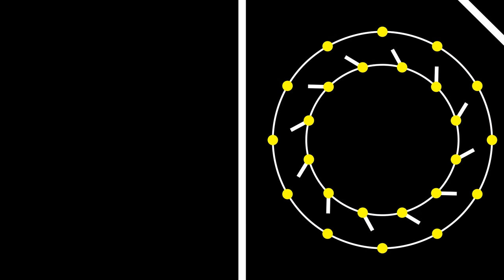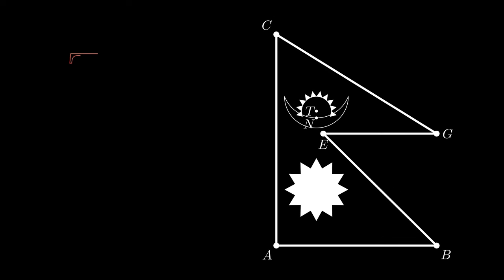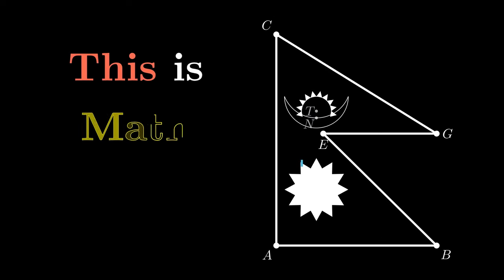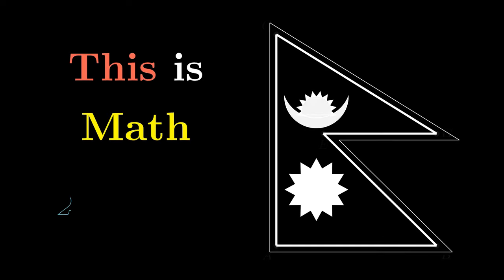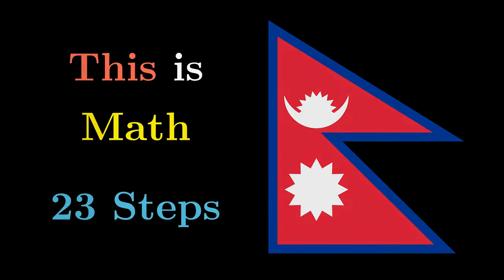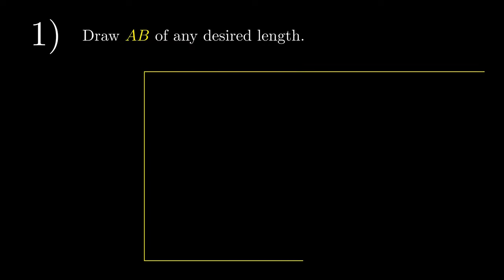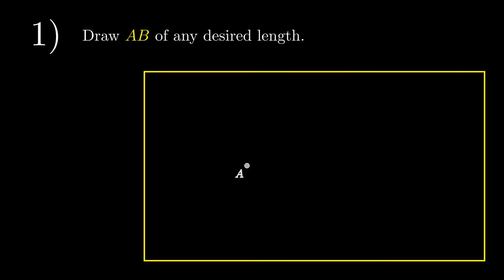Before you are the final steps in the mathematical construction of the flag of Nepal. This is drawn using entirely mathematical instructions, and there are 23 steps in the process. The original instructions are in the description box below, but in this video we're going to use a modern equivalent.